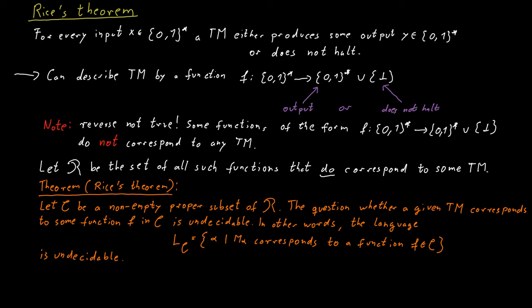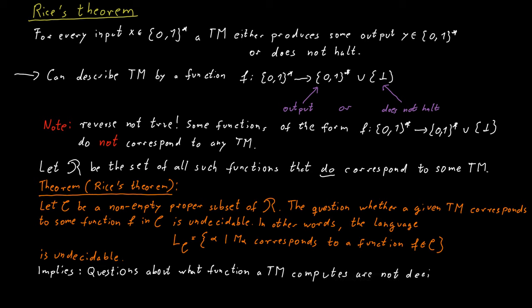Before we get to the proof, let's briefly discuss what this theorem really says. It's a very powerful theorem because it tells us that a lot of languages are not decidable. Roughly speaking, any language that deals with the question of whether a given Turing machine computes a certain language, or solves a certain problem, or anything of that nature, is not decidable. This is disappointing because we would love to have some procedure in a compiler that can automatically check whether a program actually decides the correct language or always has the correct output for each input — to automatically check whether programs do the right thing. But Rice's Theorem tells us that this is not possible.